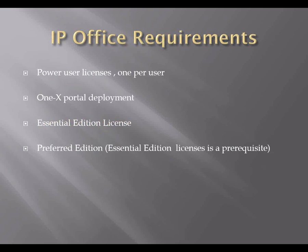As far as your IP Office requirements: of course the Power User license, and with that you'll have to deploy 1X Portal for the mobility app to connect to. You also need an Essential license — every system we've installed has one. We only sell Essential as the lowest tier. On top of that, you'll need a Preferred Edition license. What the Preferred usually grants you right off the bat is Voicemail Pro. So if you have Voicemail Pro in your environment, you can deduce that you also have the Preferred Edition license. If you have embedded voicemail, most likely you have the Essential Edition license.